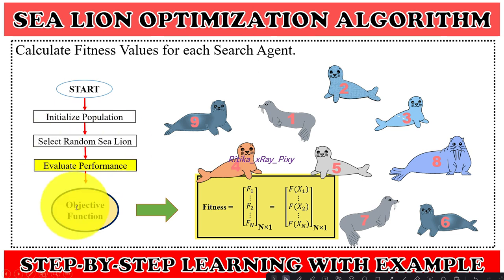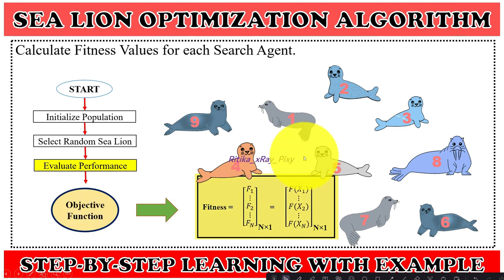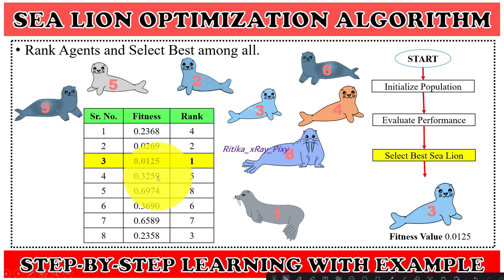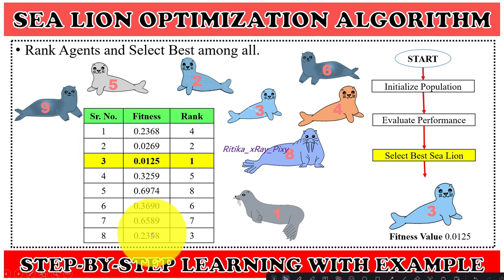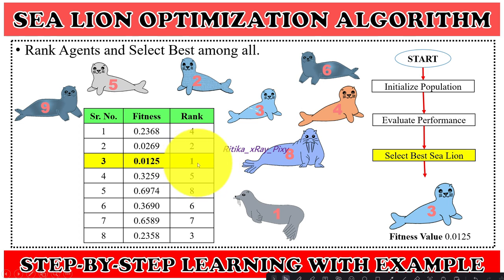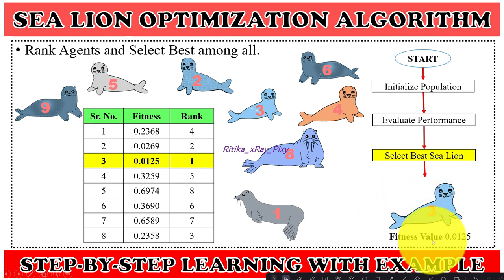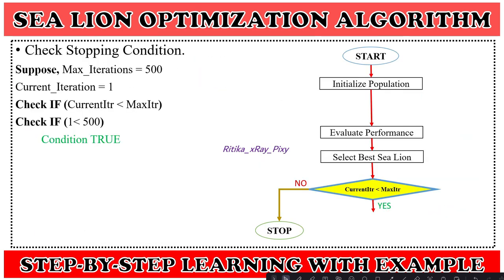Next, we calculate the fitness value for each agent using the objective function. We then rank the agents and select the best among all based on their fitness values. For example, for eight agents we calculate fitness values, rank the solutions, and consider the minimum value as the best. In this example the third agent with fitness value 0.0125 is the best solution for the current iteration.